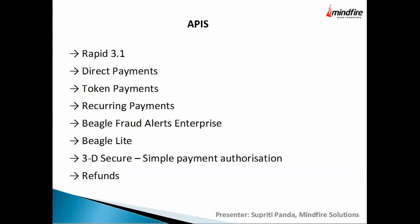Rapid 3.1 is a very popular API providing a lot of functionality. When I talked to eWAY support, they recommended using Rapid 3.1 as it has all the features. If you're not going directly to code token payment, direct payment, or recurring payment separately, you can use Rapid 3.1 to get most of these things. Other APIs include direct payment, token payment, recurring payment, Beagle fraud alert enterprise, Beagle light, 3D Secure, simple payment authorization, and refunds.